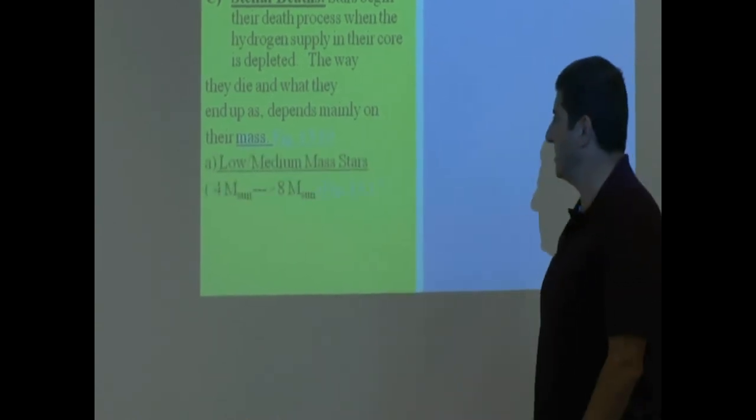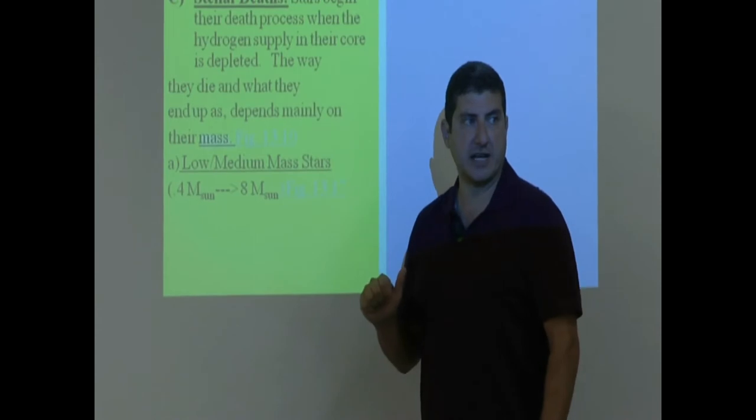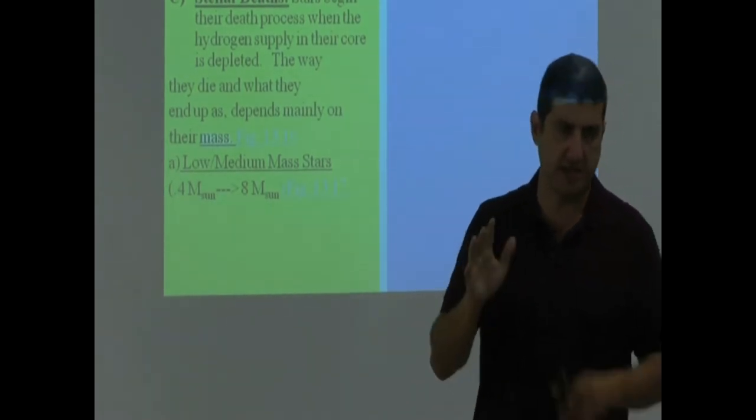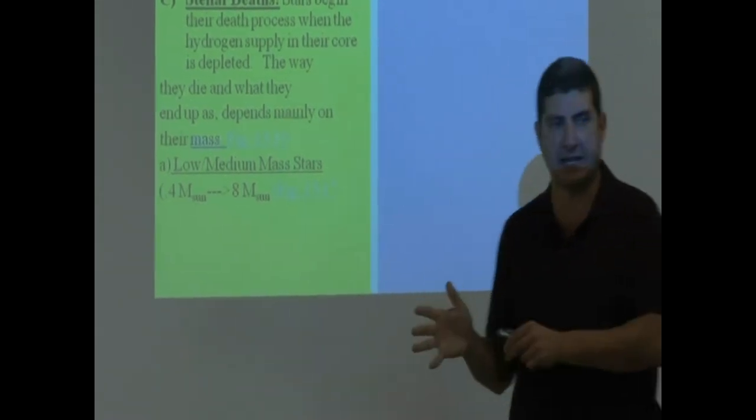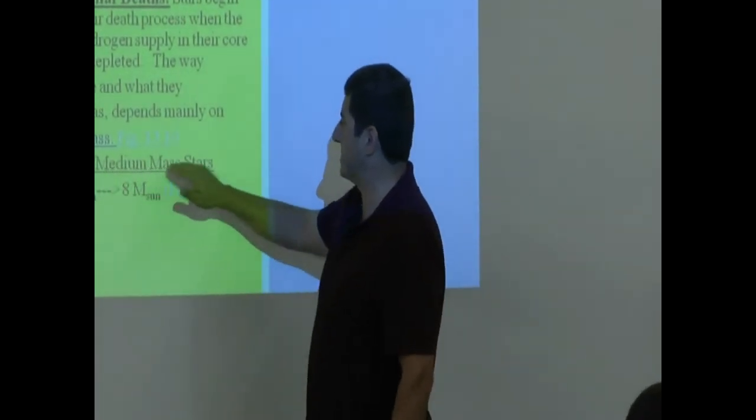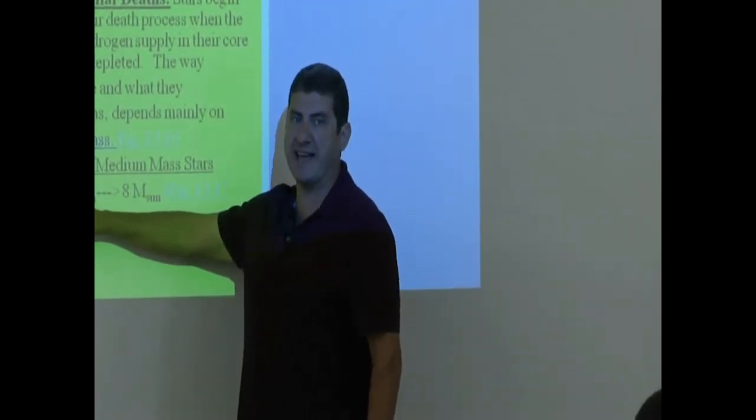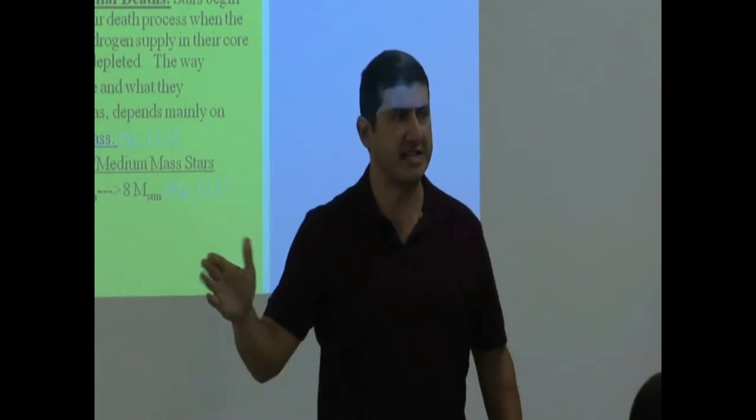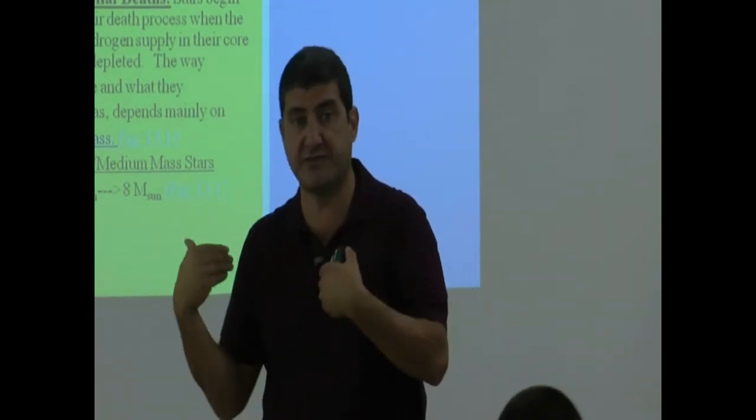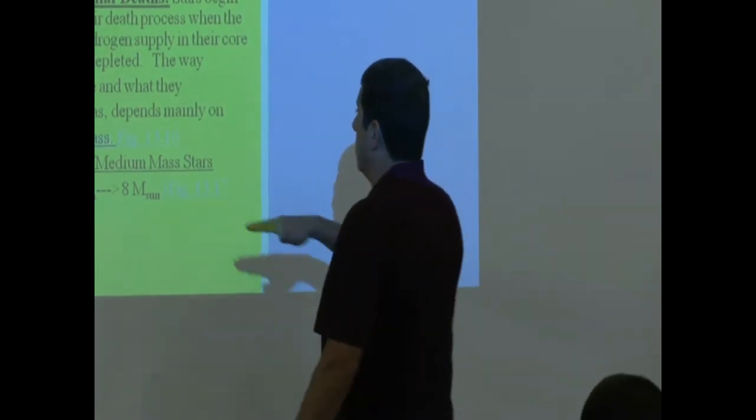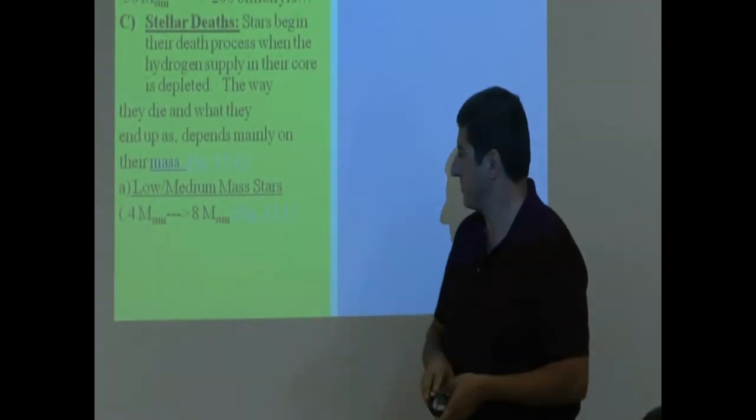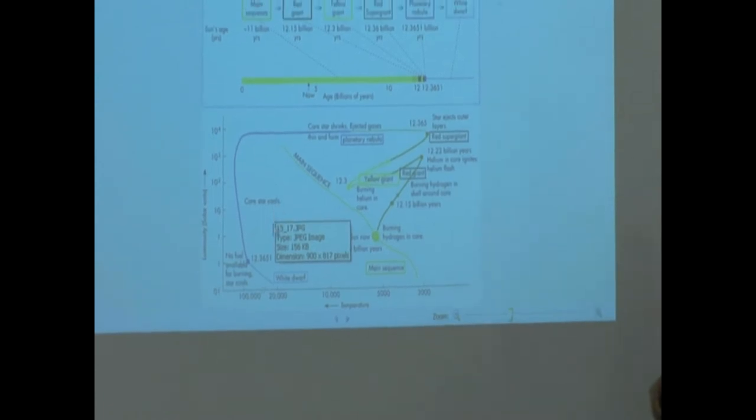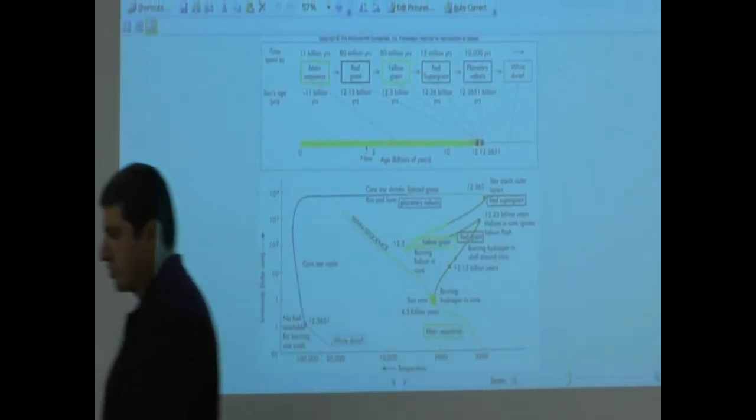What we learn is that when a low mass star dies, or a medium mass star dies, they will die similarly, not necessarily exactly the same, but they will take similar paths. Low or medium mass stars, roughly from 0.4 solar masses, 40% the mass of the sun, all the way to eight times the mass of the sun. The sun itself is in this category. If we look at this picture, it will show us the evolutionary track that this kind of star will take.